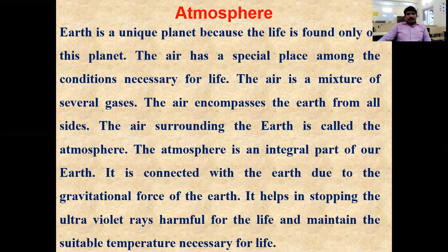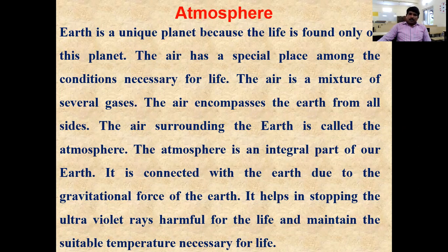Earth is a unique planet because life is found only on planet Earth. Air has a special place among the conditions necessary for living organisms. The air is a mixture of several gases and encompasses the Earth from all sides. The layer surrounding the Earth is called the atmosphere. The atmosphere is an integral part of Earth, connected with the Earth due to its gravitational force. It helps in stopping ultraviolet rays harmful for life and maintains a suitable temperature necessary for living organisms.